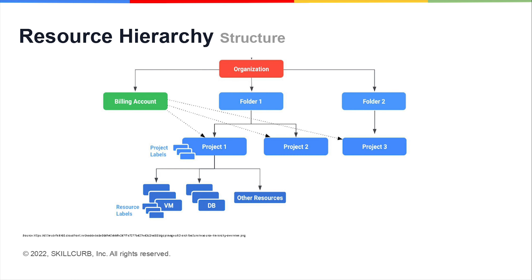Looking at it in a tabular form makes a bit more sense. The structure of Google's cloud resources are similar to that of a conventional operating system's file system, so you can compare it to the way you would store files and folders on your own personal computer.